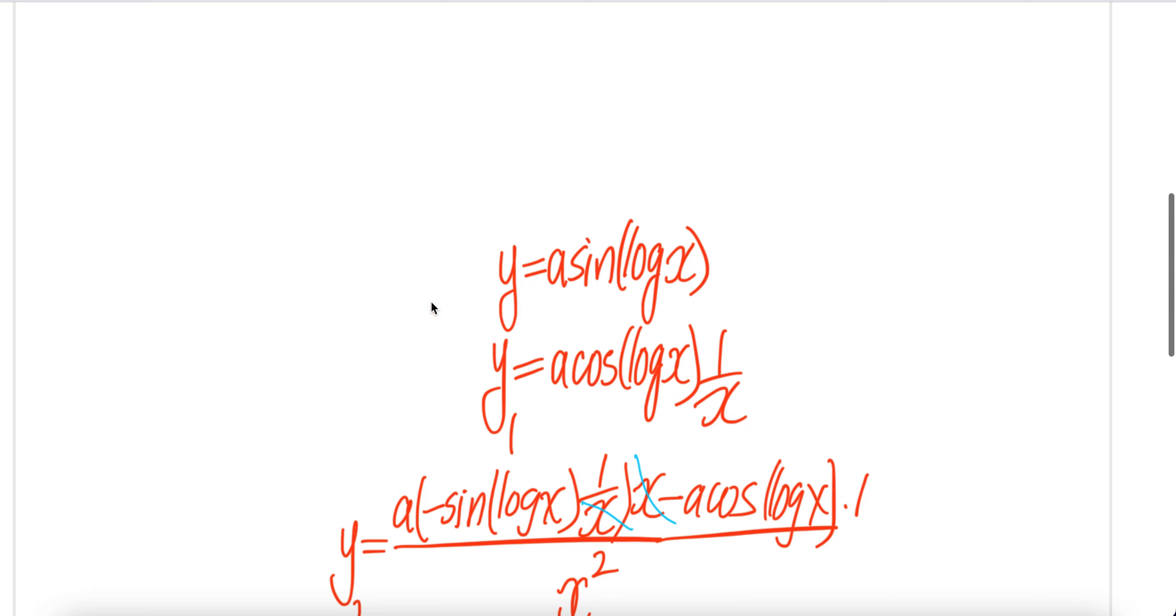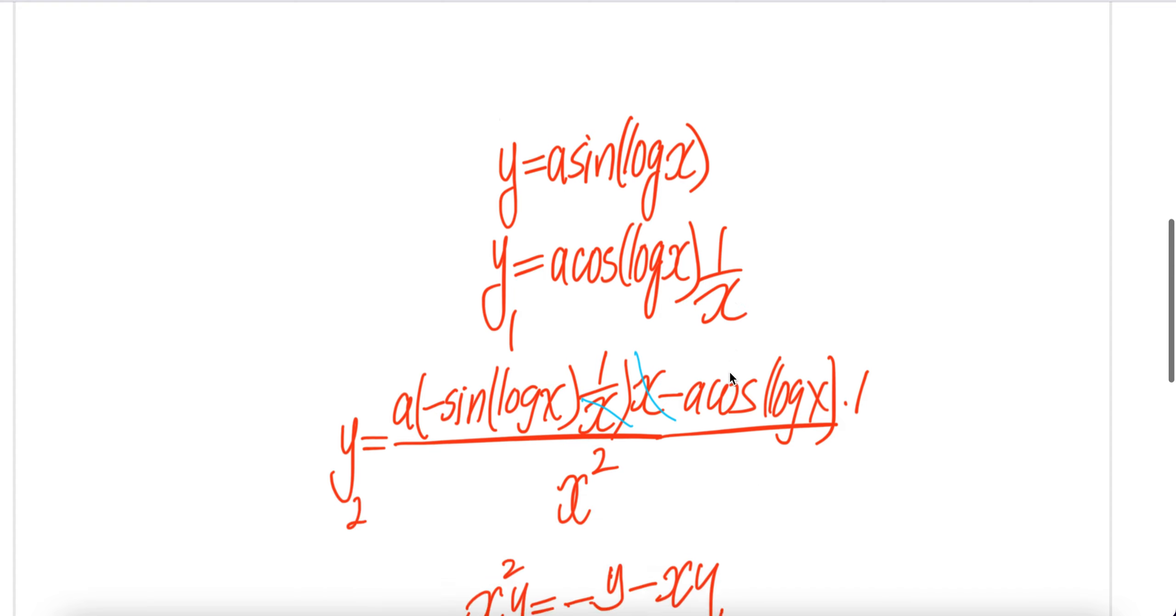Take the first derivative with respect to x, you get y₁ on the left-hand side. The right-hand side: a comes out from the derivative. The derivative of sin is cos(log x) times the derivative of log x, which is 1/x.